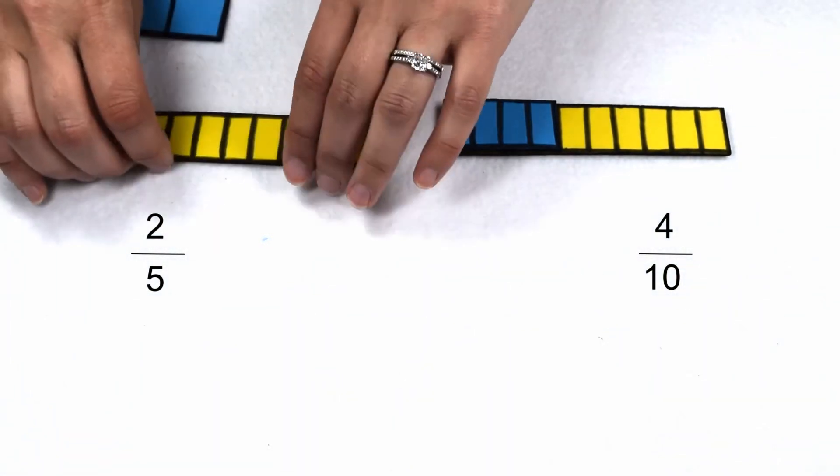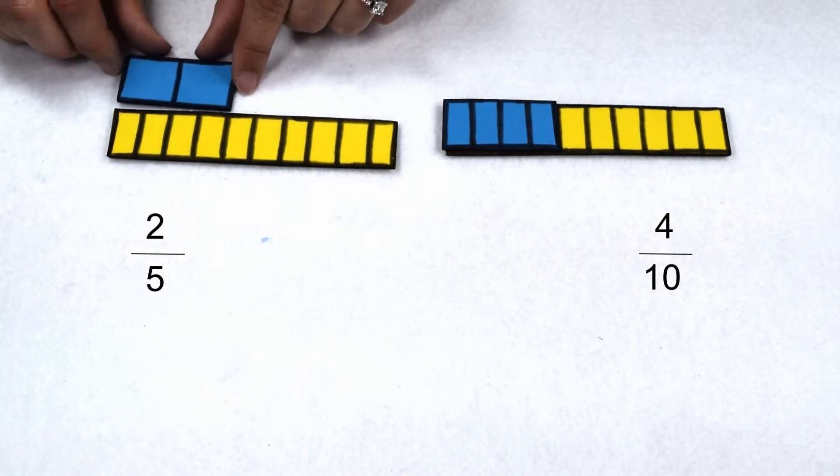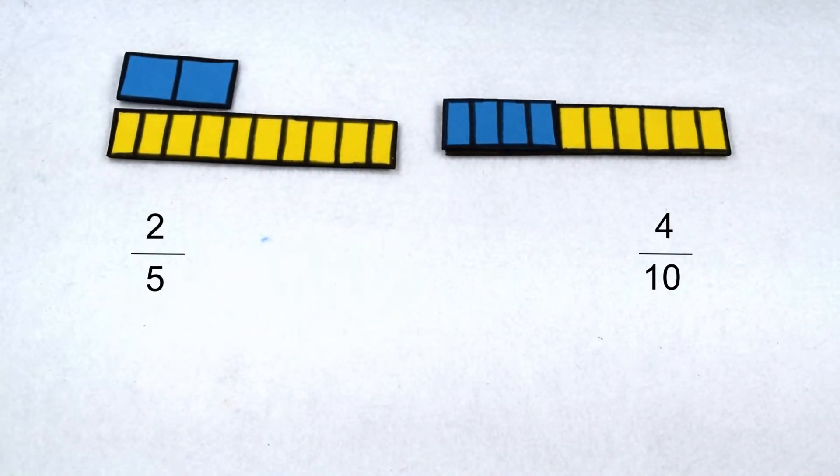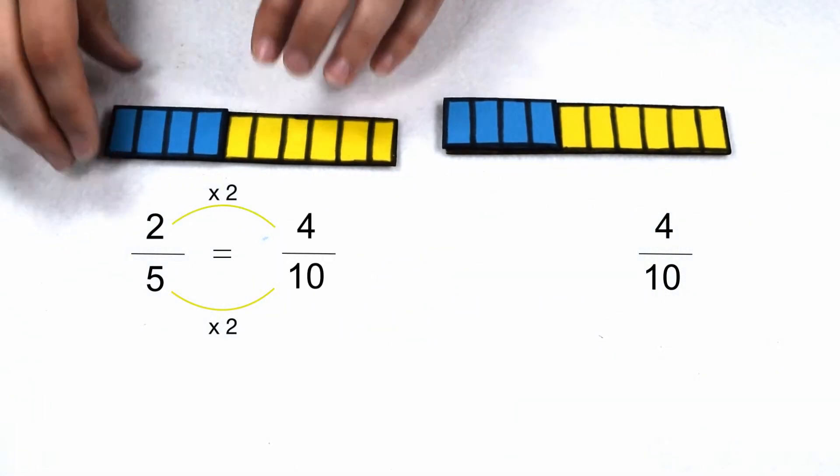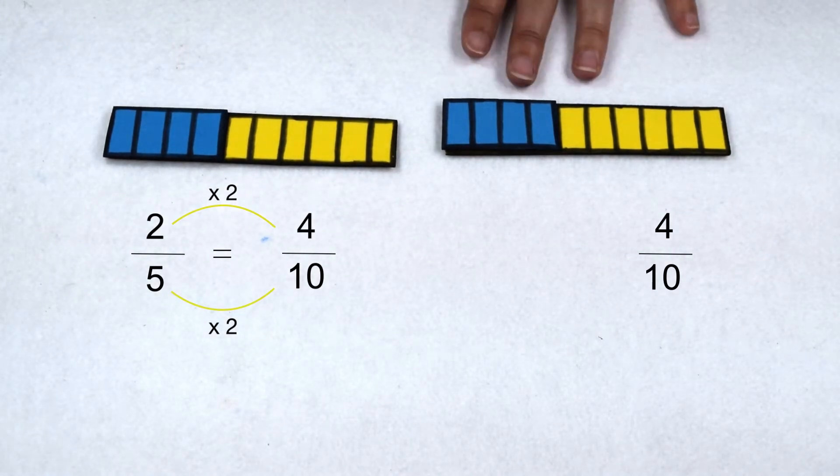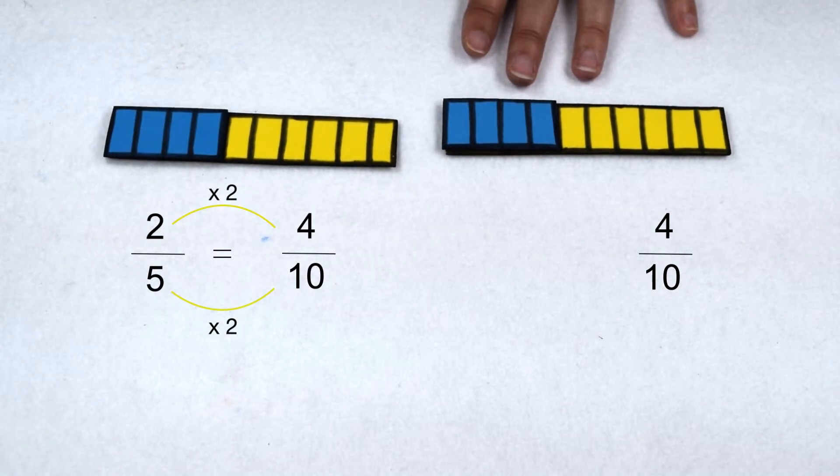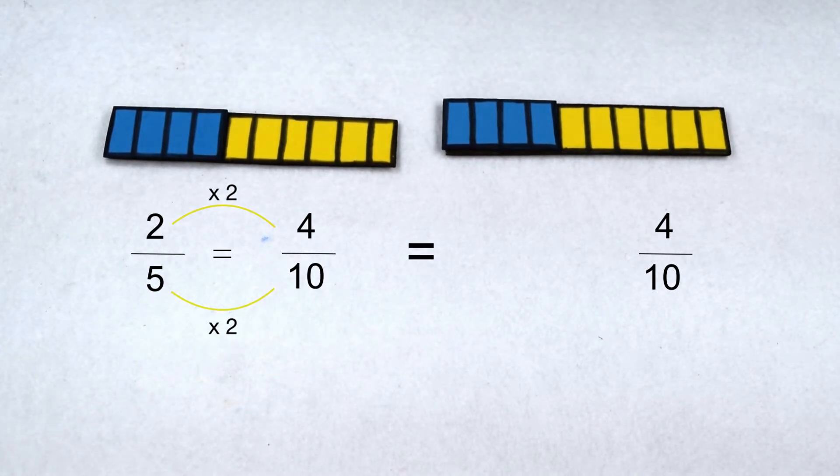So we need to start out by changing 2 fifths into a fraction out of 10. To get from 5 to 10, we multiply by 2, so that means we need to multiply our numerator by 2 as well. 2 times 2 gives me 4, so 2 fifths becomes equivalent to 4 tenths. While our other fraction started out as 4 tenths, it already has a common denominator of 10, so we don't need to make an equivalent fraction. In fact, now our fractions are the same. So they aren't greater than or less than. Instead, we have equivalent fractions. 2 fifths is equal to 4 tenths.